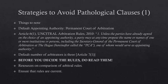In this regard, Article 6.1 of the rules states: 'Unless the parties have already agreed on the choice of an appointing authority, a party may at any time propose the name or names of one or more institutions or persons, including the Secretary General of the Permanent Court of Arbitration at the Hague (PCA), one of whom would serve as appointing authority.' Additionally, Article 7.1 of the UNCITRAL Arbitration Rules provides that the default number of arbitrators is three, in the absence of an agreement for a sole arbitrator.